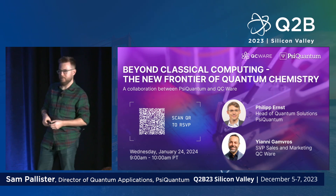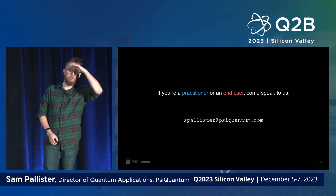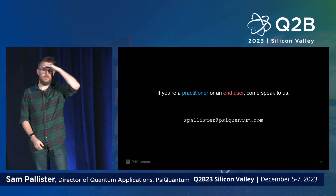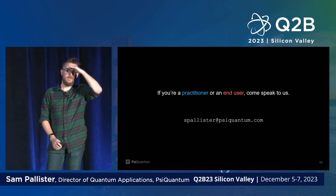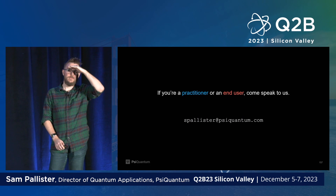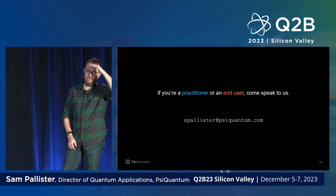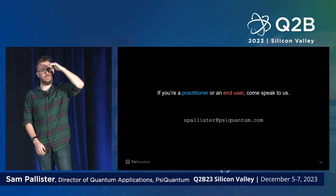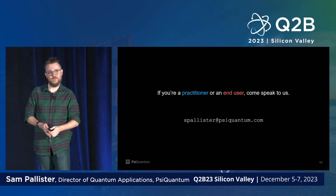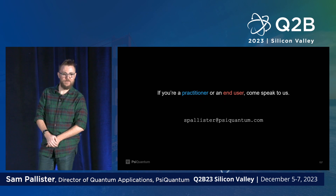Question: You talked about the large difference between NISQ and fault tolerance and how you estimate resources for fault-tolerant computing. Did you also try to do any resource estimation for NISQ algorithms? Answer: No, for a couple of reasons. One is that PsiQuantum doesn't plan on building any NISQ systems. The other is that the framework relies on the algorithm lacking the heuristic nature of NISQ — the precise reason we can do this resource estimation is that even in advance of running the algorithm, I can be explicit about how long it takes to run, which is not something you get with a NISQ device.